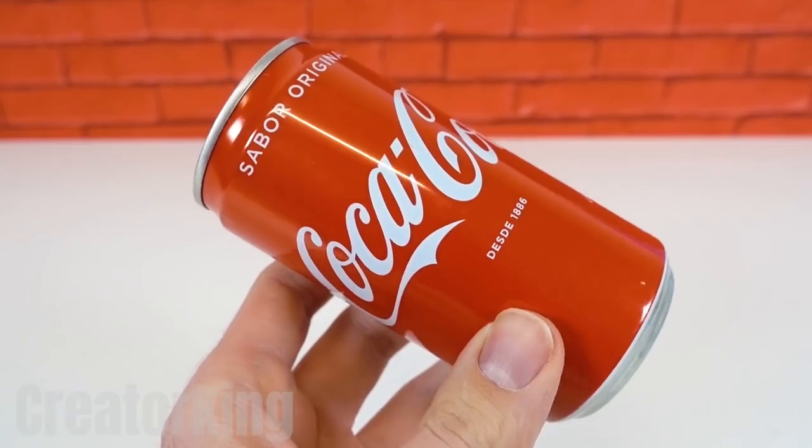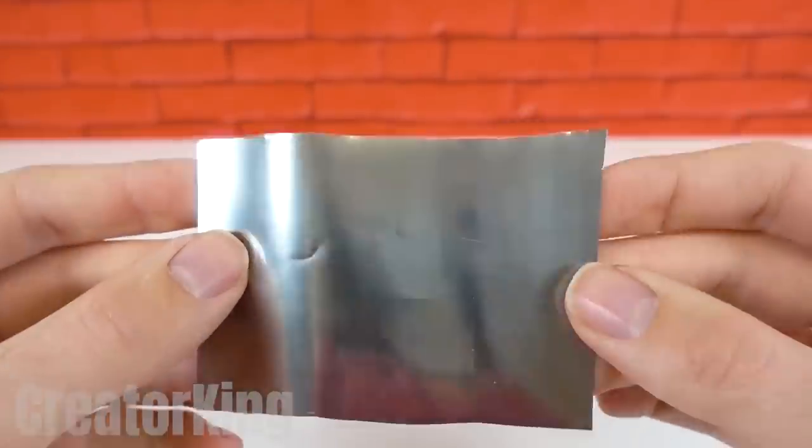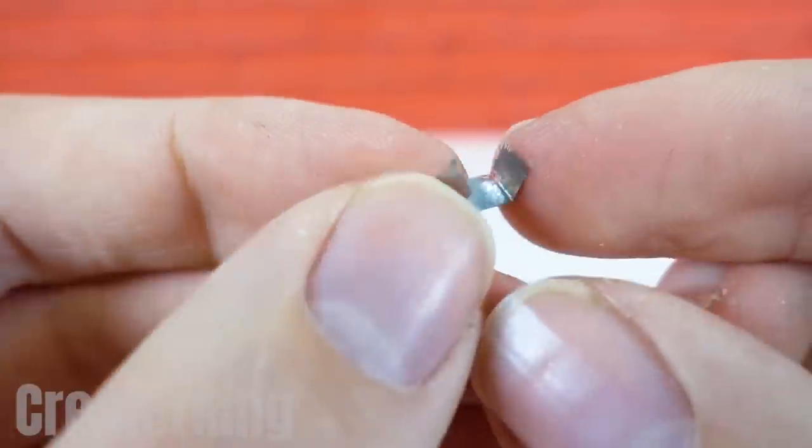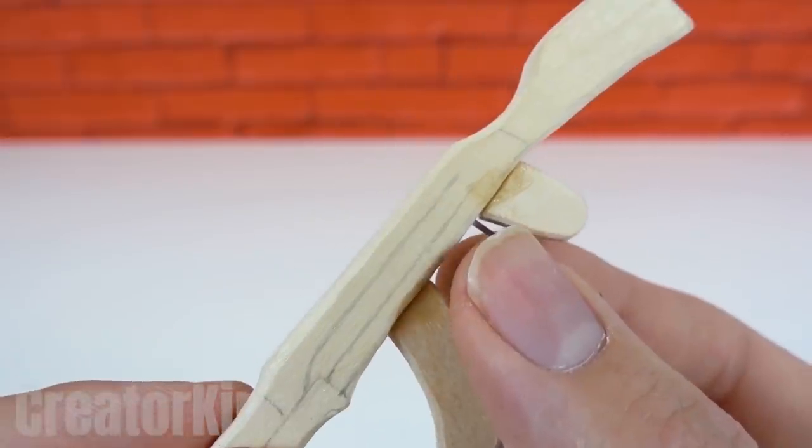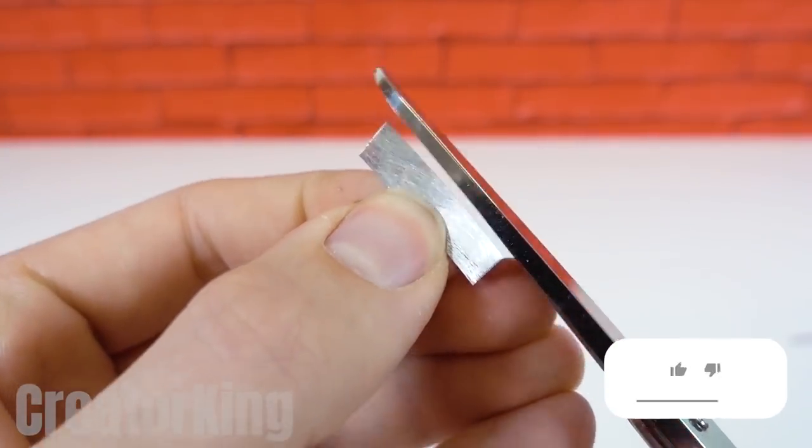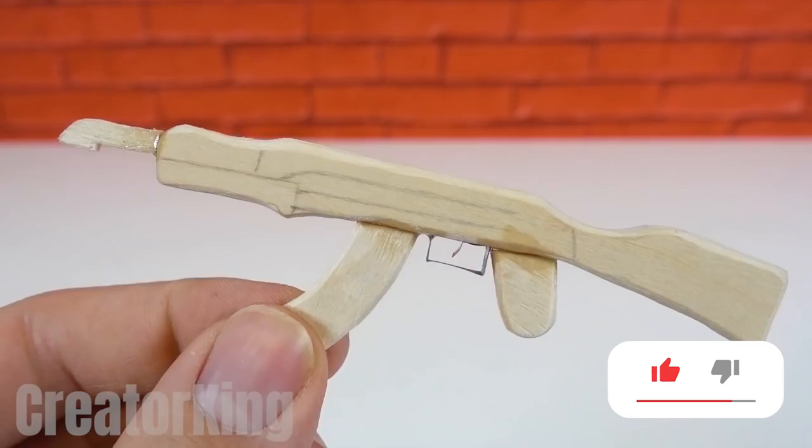Now we'll need an empty soda can. Mine, of course, will be a Coke. Several fans commented on previous videos asking me if I promote this drink because it appears in almost all of them. But the truth is, I just love it. After this little commercial, we will glue the aluminum piece that we extracted from the can and cut another small piece to shape the trigger. We're almost done.